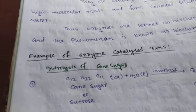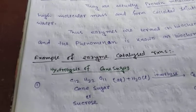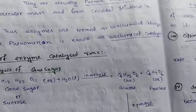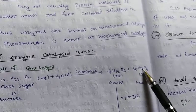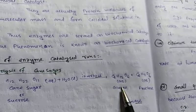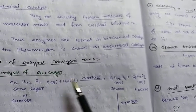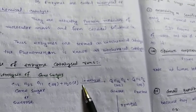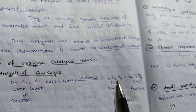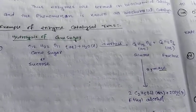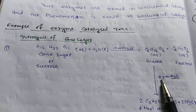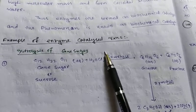The hydrolysis of cane sugar produces glucose and fructose. The enzyme responsible for this reaction is called invertase. The product glucose can be further fermented to ethyl alcohol.